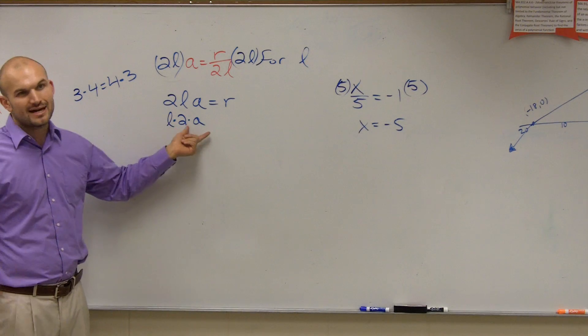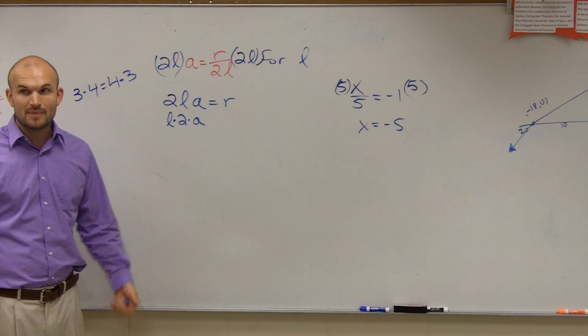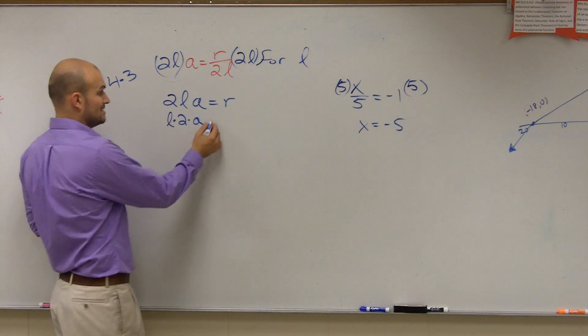So could I say that 2 times L times A is the same thing as L times 2 times A? Is it a little bit easier now to see what is happening to the L? It's being multiplied by 2 and A.